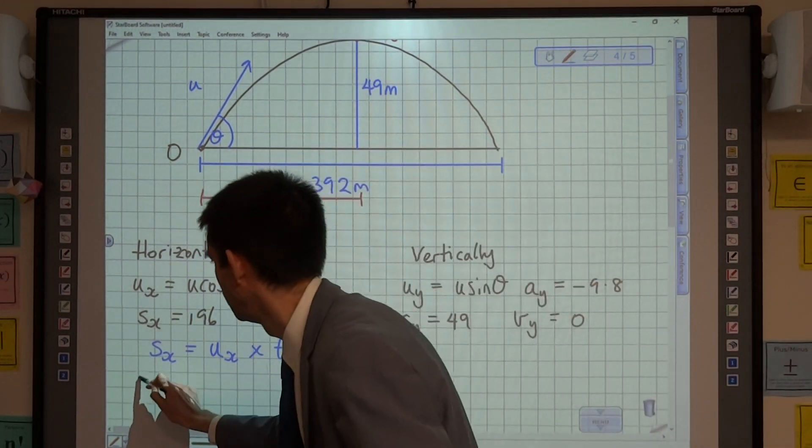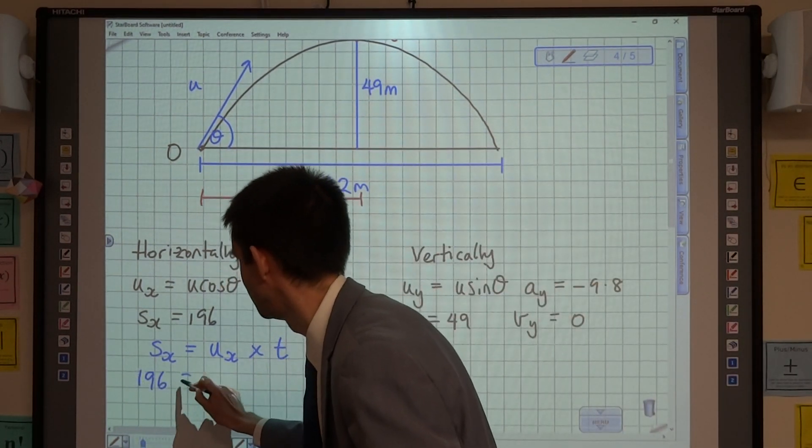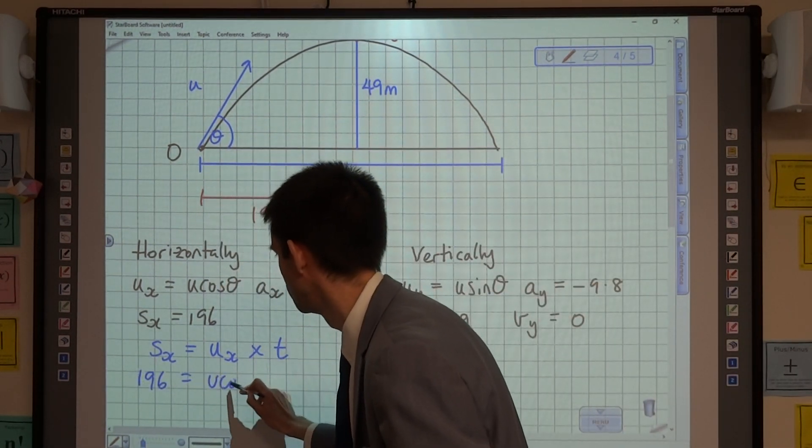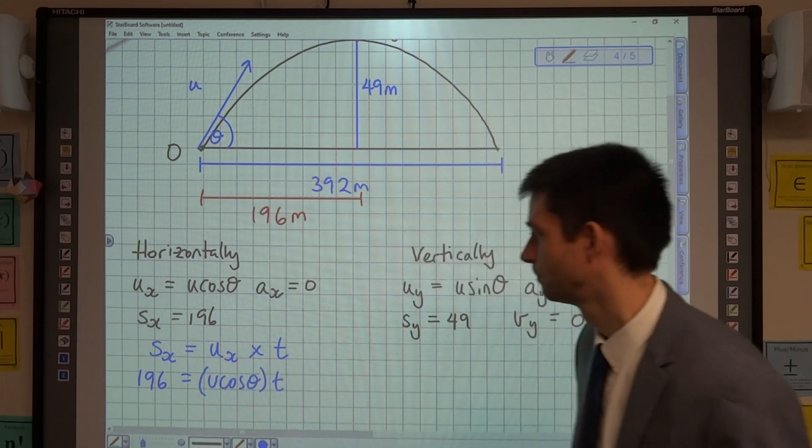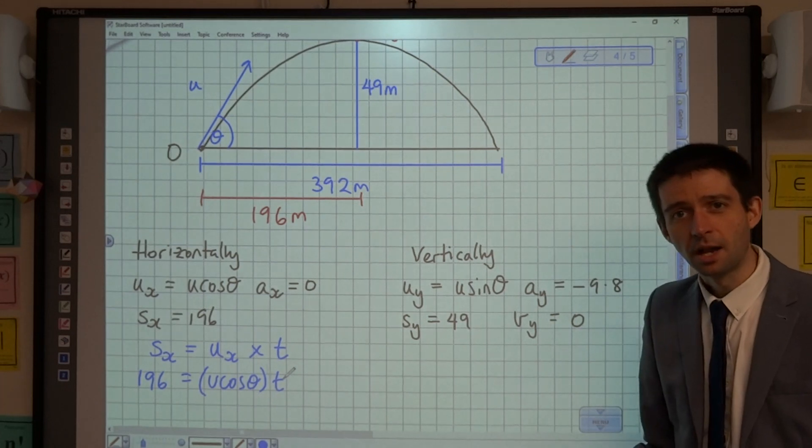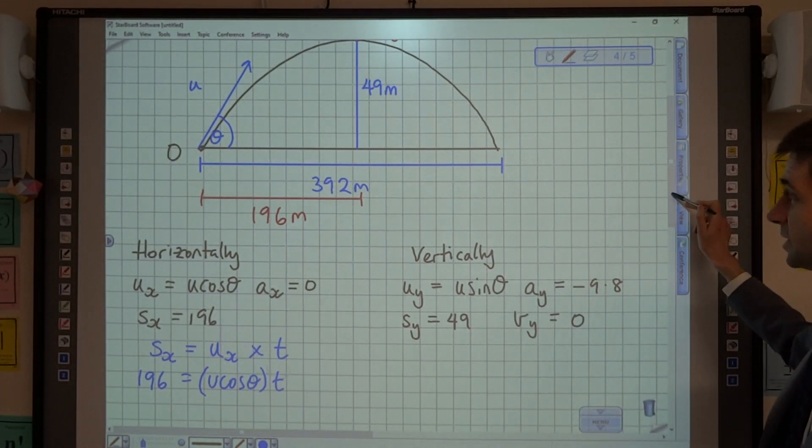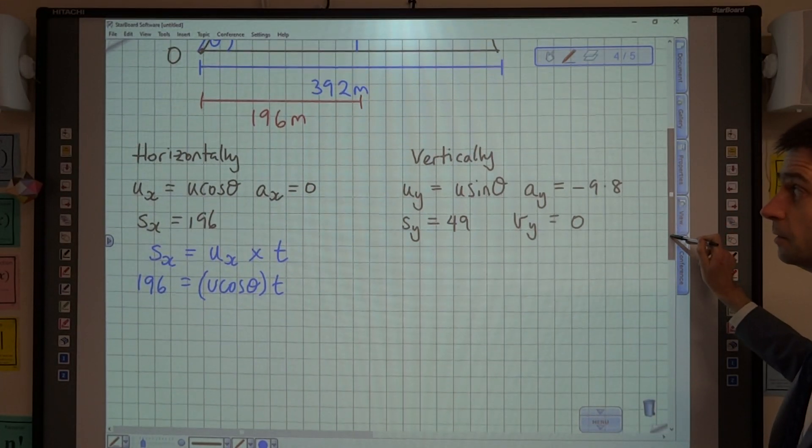So, what I can do here is I can say that 196 is equal to u cos theta multiplied by t. Can't do anything with that at the moment, too many unknowns, so I'll come back to that later, and I'll now look at working vertically.